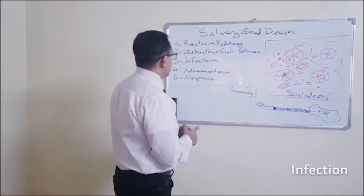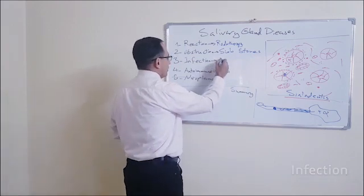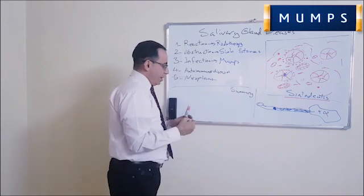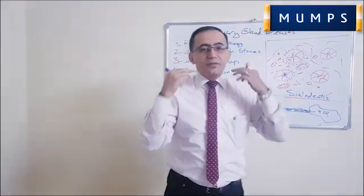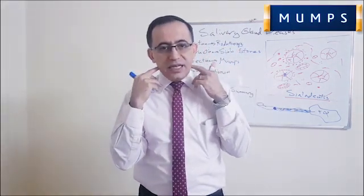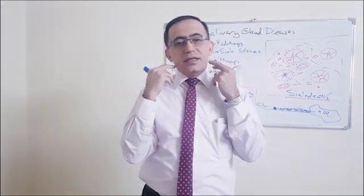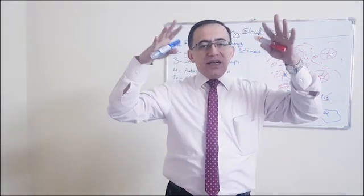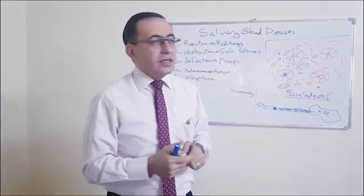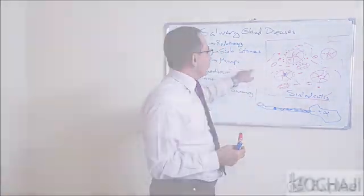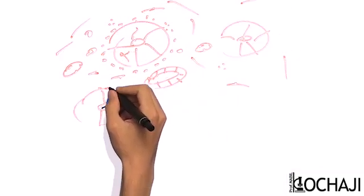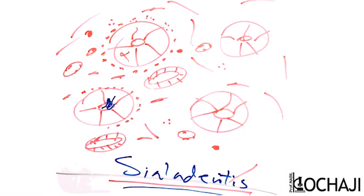In infection — mumps, for example — it's a viral infection that attacks the salivary glands. It affects young patients and causes high fever. The target of the virus is again the acinar cells, and again the white blood cells give the same microscopic impression.